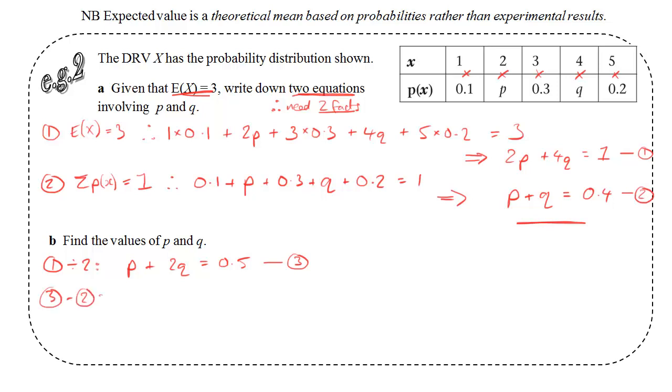If I subtract those, equation 3 minus equation 2, p take away p disappears. 2q take away q gives me q. And finally, 0.5 take away 0.4 gives me 0.1. So the value of q just pops out. If I substitute that into equation 3, I get p plus 2 lots of q. So 2 lots of 0.1 is 0.5. And I simply have to subtract that. So p is 0.5 minus 0.2, which is 0.3.